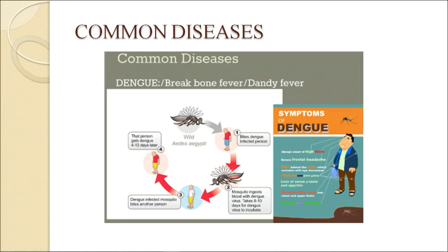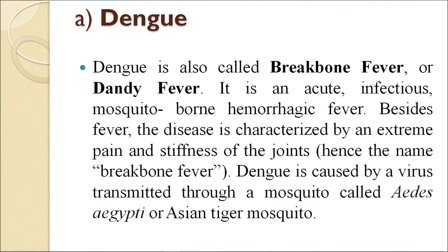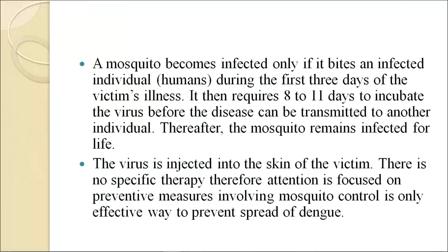Now we will discuss some common diseases that may reach epidemic proportions. The first one is dengue, also called break-bone fever or dandy fever. It is an acute infectious mosquito-borne hemorrhagic fever, characterized by extreme pain and stiffness of joints — hence the name break-bone fever. Dengue is caused by a virus transmitted through the mosquito Aedes aegypti, also known as the Asian tiger mosquito. A mosquito becomes infected only if it bites an infected individual during the first three days of illness. It then requires 8 to 11 days to incubate the virus before transmitting it to another person. Thereafter the mosquito remains infected for life. There is no specific therapy, so attention is focused on preventive measures involving mosquito control — the only effective way to prevent the spread of dengue.